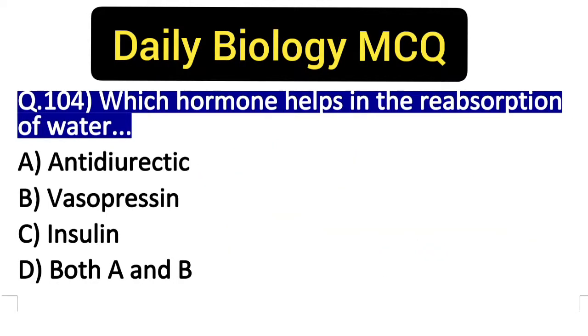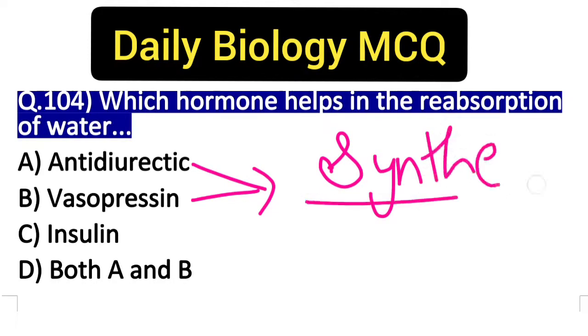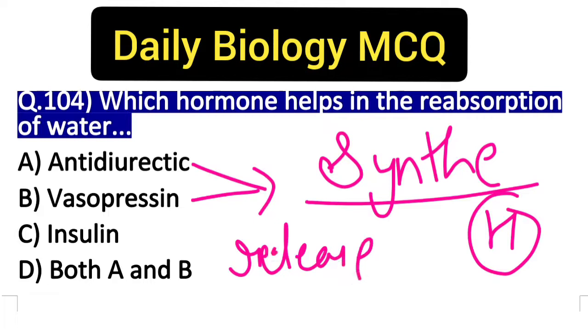So if you're asked in an MCQ that vasopressin or antidiuretic hormone is synthesized by, pay attention to the word 'synthesized.' The answer would be hypothalamus. If the question asks 'released by,' then the answer is pituitary gland.